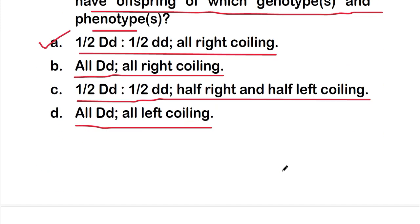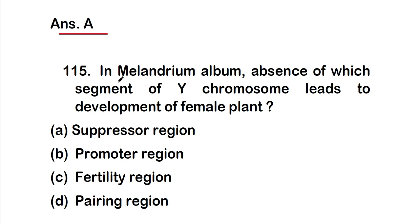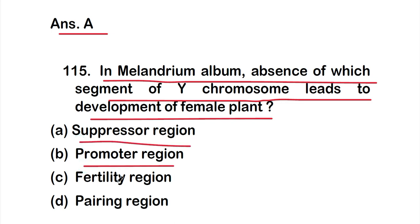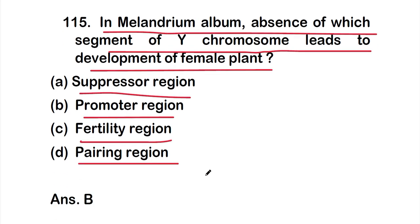Question 115: in Melandrium album, absence of which segment of the Y chromosome leads to development of a female plant? Options: A suppressor region, B promoter region, C fertility region, D pairing region. The right answer is Option B — the promoter region. Absence of the promoter region of the Y chromosome leads to development of female plants in Melandrium album.